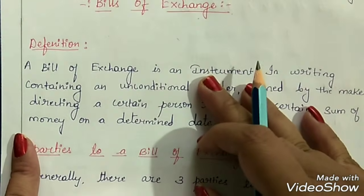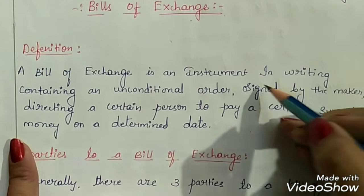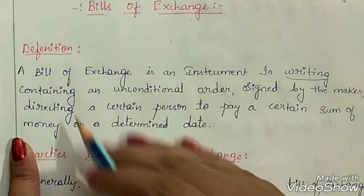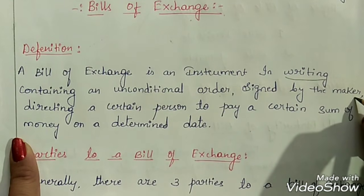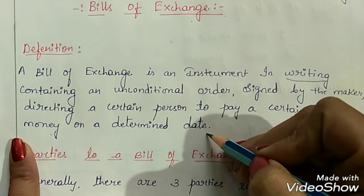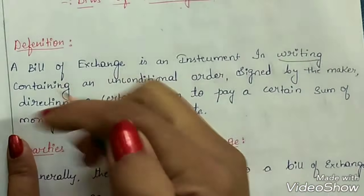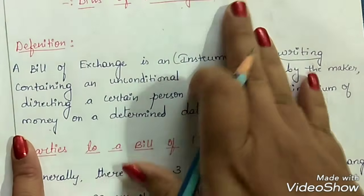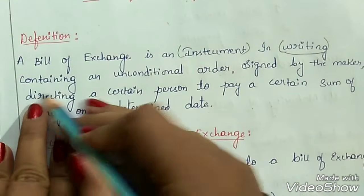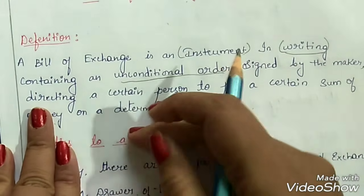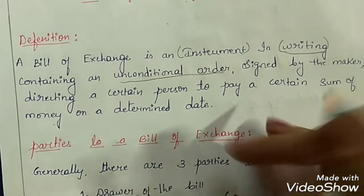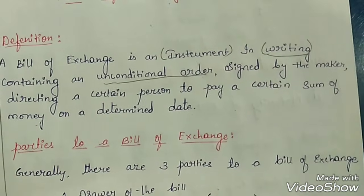Coming to the definition: a bill of exchange is an instrument — a financial instrument — in writing, so it cannot be oral. It contains an unconditional order, signed by the maker, directing a certain person to pay a certain sum of money on a determined date. Breaking this down: first, it is a financial instrument; second, it must be in written format; third, it contains an unconditional order — A is ordering B to pay, and it must not be conditional.